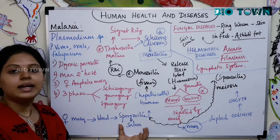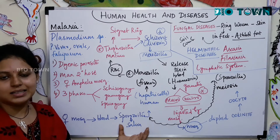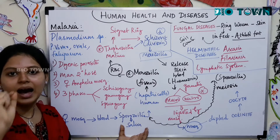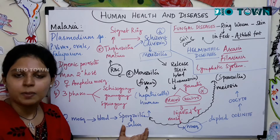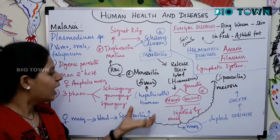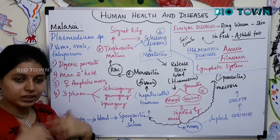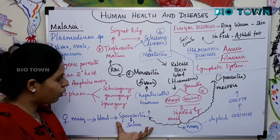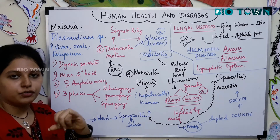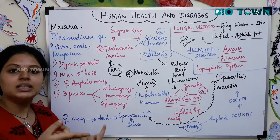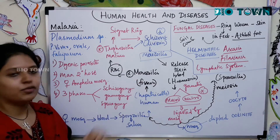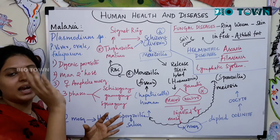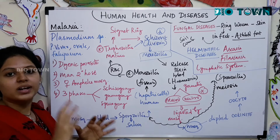The sporozoite circulates in the human circulatory system for a certain period of time, after which it locates the hepatic cells — the liver cells, also called hepatocytes. They settle onto the liver cells, where asexual reproduction happens. As a result of asexual reproduction through schizogony, these sporozoites form merozoites.